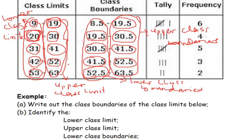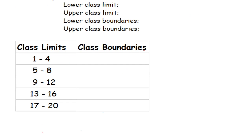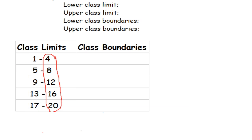Now I'm going to explain how to write out class boundaries if you are given class limits. What we have here are class limits because the value that ends a class interval does not begin the next one. For example, four ends this class interval but five begins the next — four and five are not the same. The first part of each class interval is called the lower class limit and the second part is called the upper class limit.